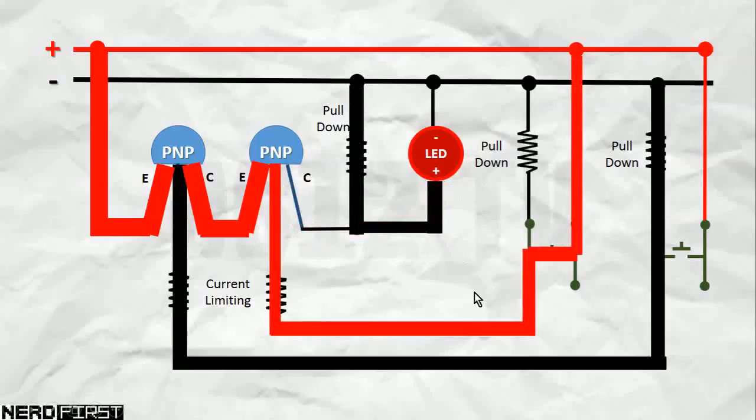As long as any button is pressed, the connection is broken, and as a result, the positive terminal of the LED is pulled down to ground. It's as simple as that, so let's go ahead to our breadboard and see this in action.